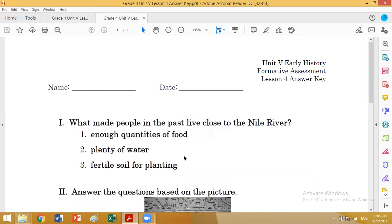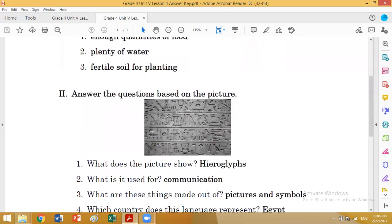Formative assessment sheet for lesson four. Exercise one: What made people in the past live close to the Nile River? Number one: enough quantities of food. Number two: plenty of water. Number three: fertile soil for planting. Exercise number two: